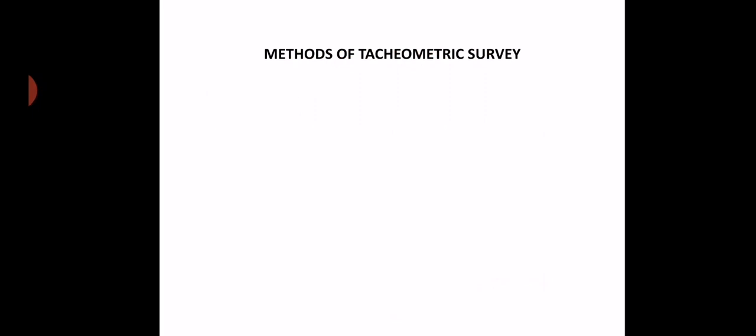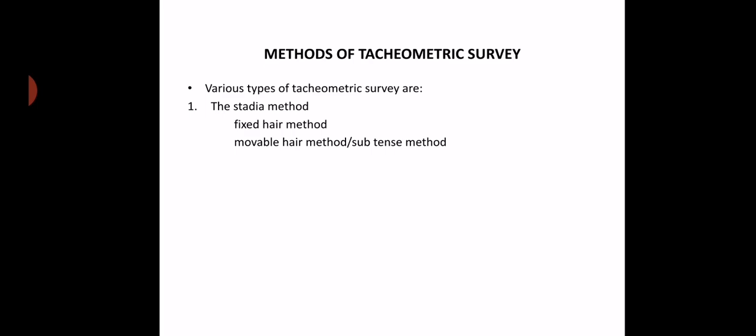Let's begin. The methods of tachometric surveying — there are three methods. The first one is the stadia method. The stadia method is divided into two categories: the fixed hair method and the movable hair method. The movable hair method is also called the subtense method. In the fixed hair method, the upper hair and lower hair in the diaphragm are fixed, but in the movable hair method we can adjust the distance between the upper and lower hair.